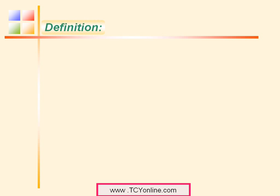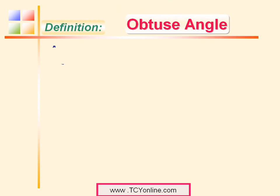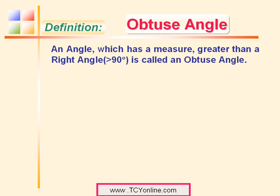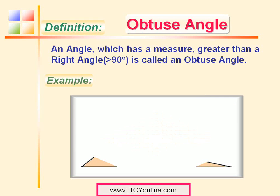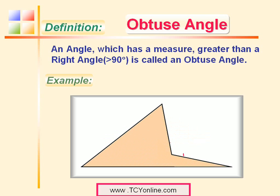Similarly, let's see what an obtuse angle is. An obtuse angle is basically an angle which is greater than a right angle, or we can say it has a measure greater than 90 degrees. In this figure, we can see that this is an obtuse angle because it appears to be greater than 90 degrees.